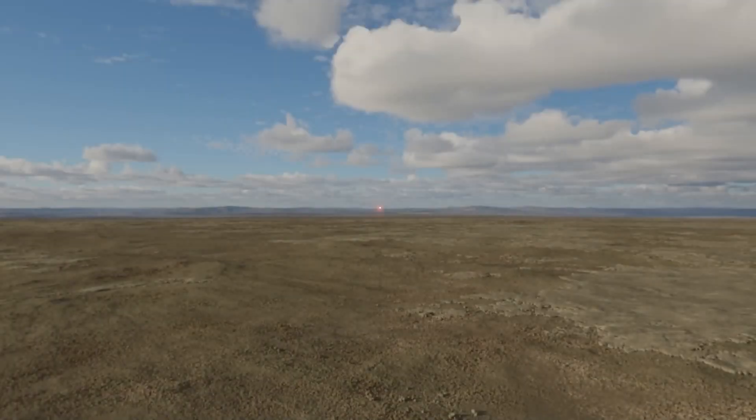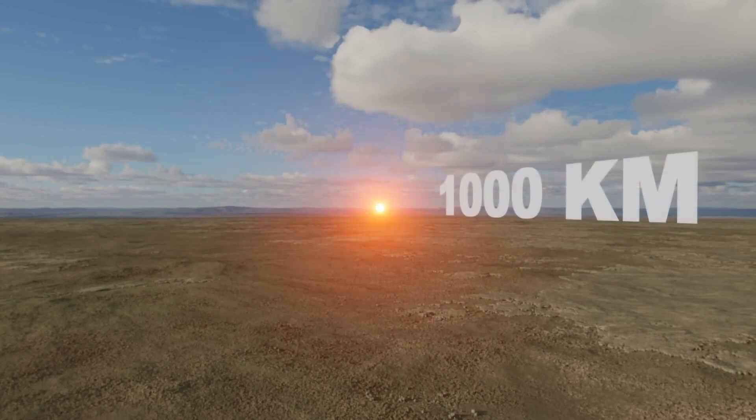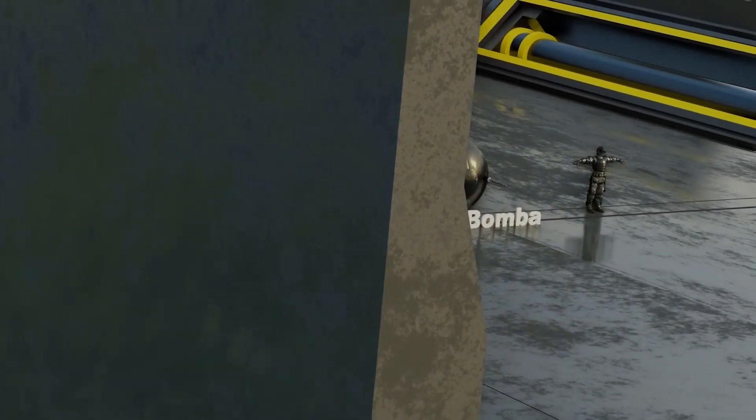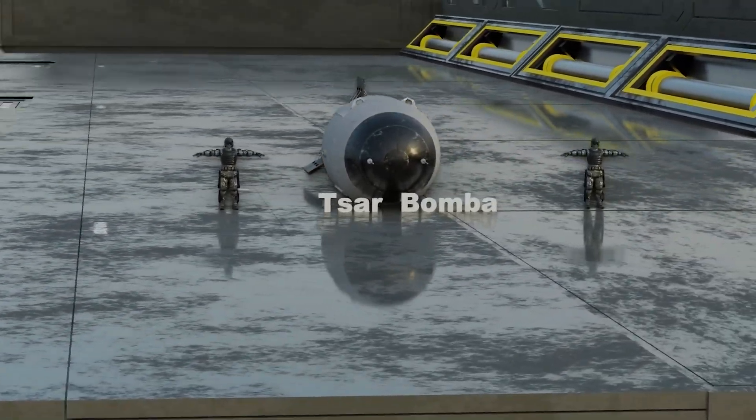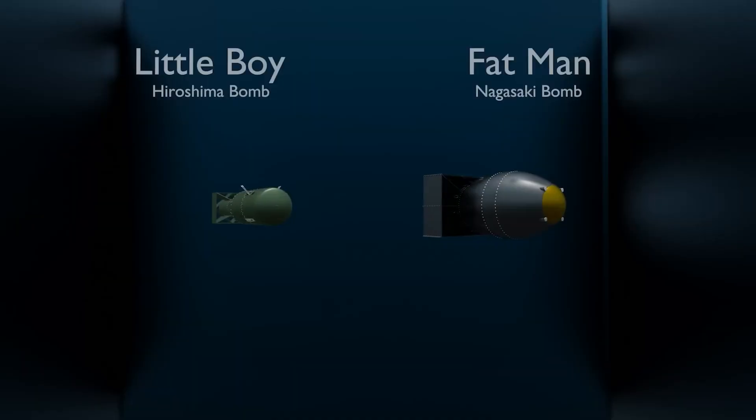The blast shattered windows hundreds of miles from where it was set off, and aerial photos of the place it was detonated still show a severely scorched rock surface. This was the only purpose that bomb was good for.